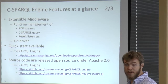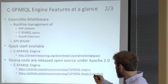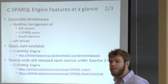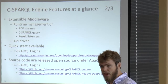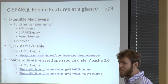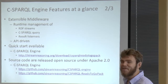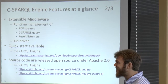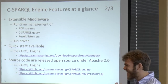The C-SPARQL engine is open source — the entire system — and the source code is on GitHub. You also have a ready-to-go package with a bunch of examples you can use for your experiments. If you have questions, you can send an email to me or to Marco Balduini, who is the current responsible for this project.